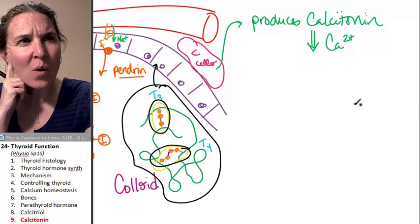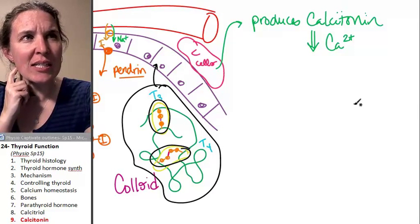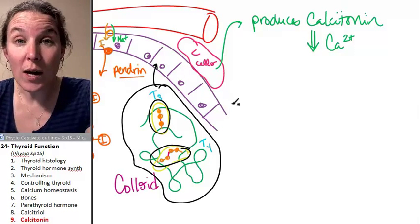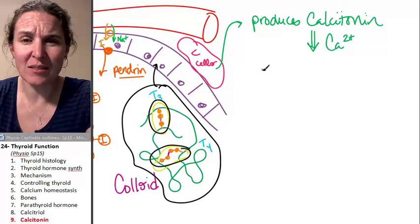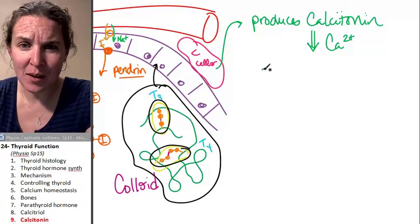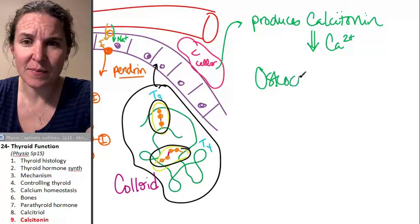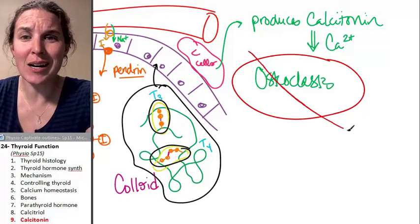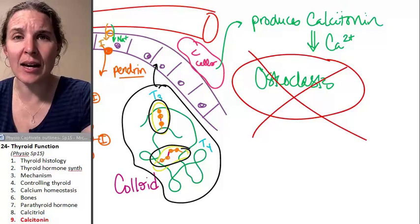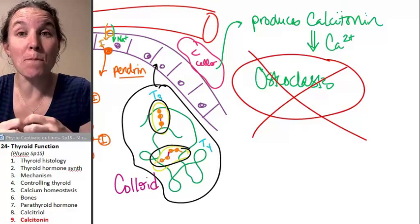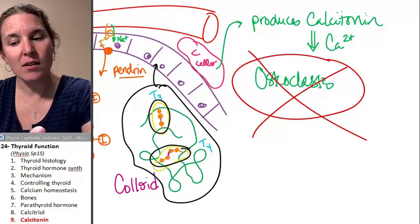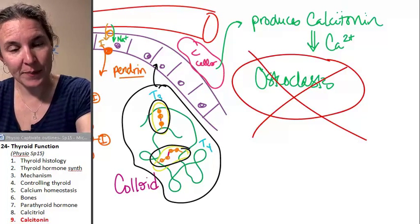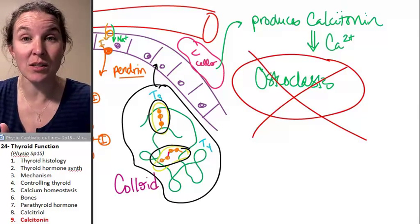So how is it going to decrease calcium concentration in the blood? It has one job. It puts the stop sign up to the osteoclasts. It says osteoclasts, you guys are crazy, settle down. If the osteoclasts are not breaking up your bone then they're not going to put calcium into your blood. That's going to decrease calcium concentrations.